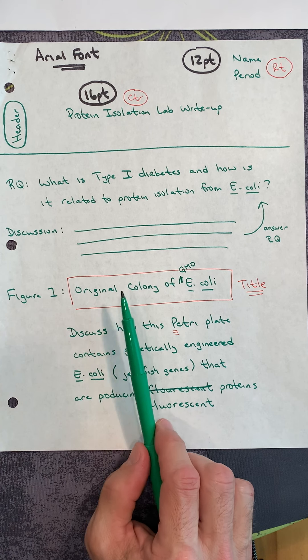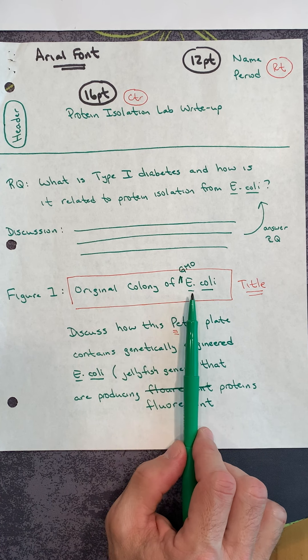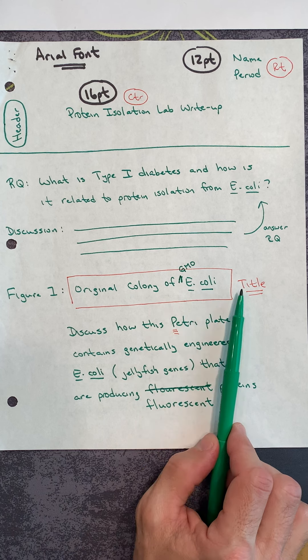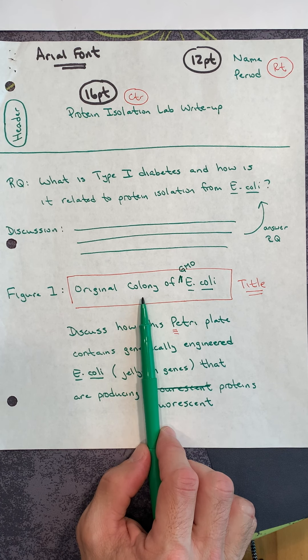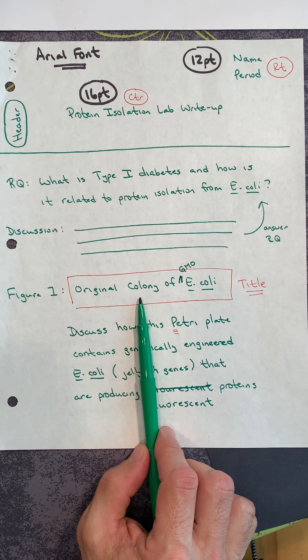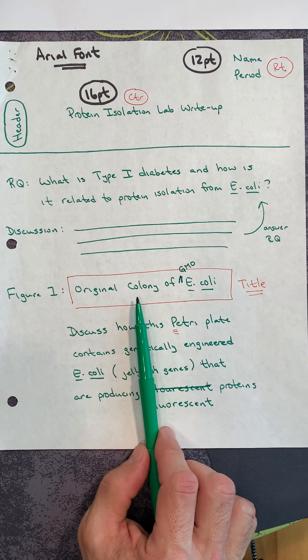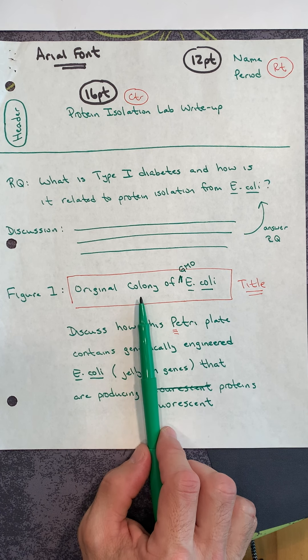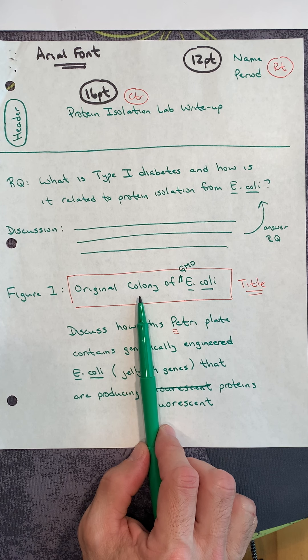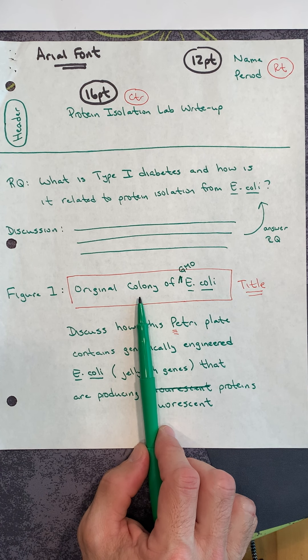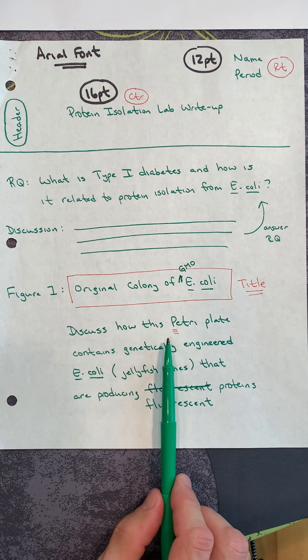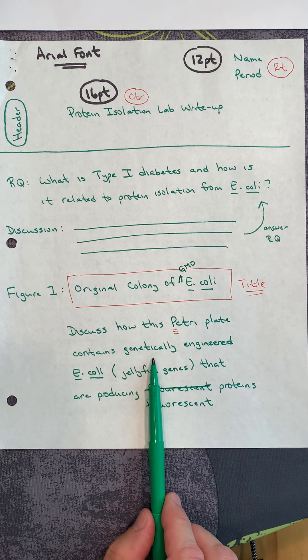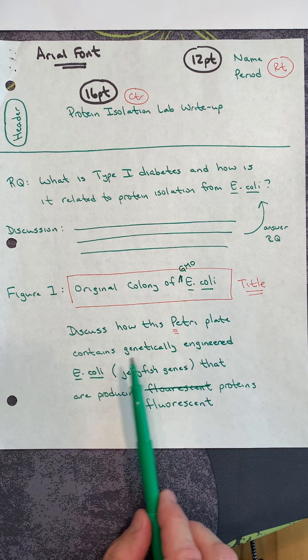Then figure 1, the original colony of the GMO E. coli. This is the title of this figure. This is the picture that you took on your phone of the fluorescent colony. Don't forget to trim this. Please keep as much of the black edge away from the petri plate.